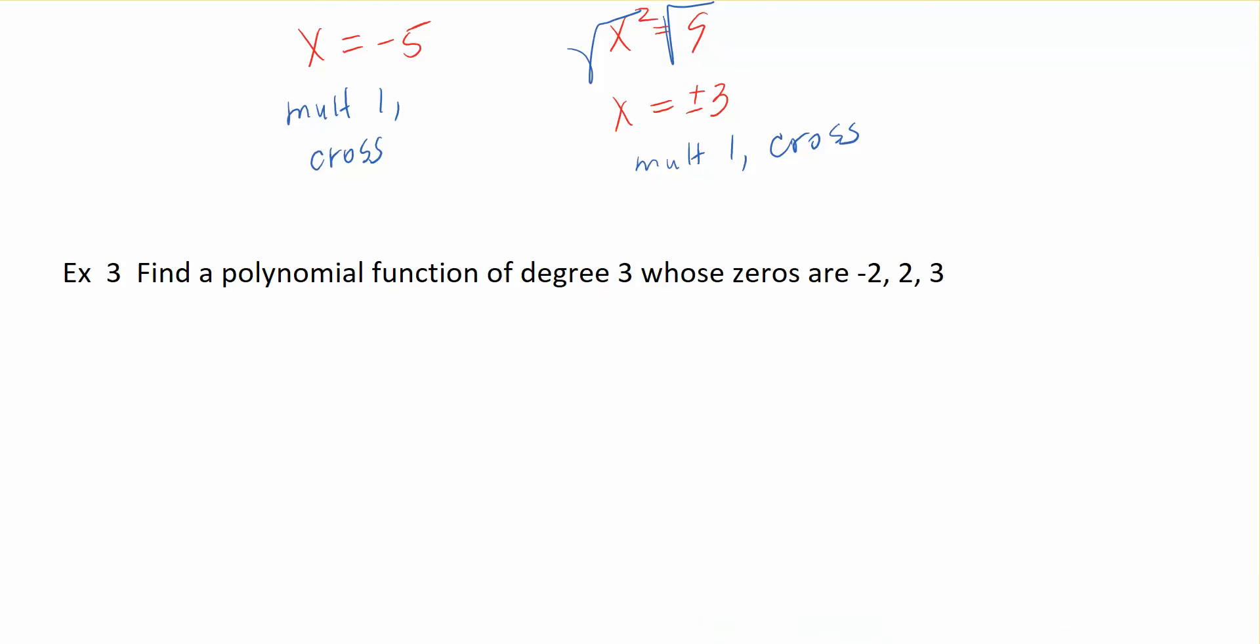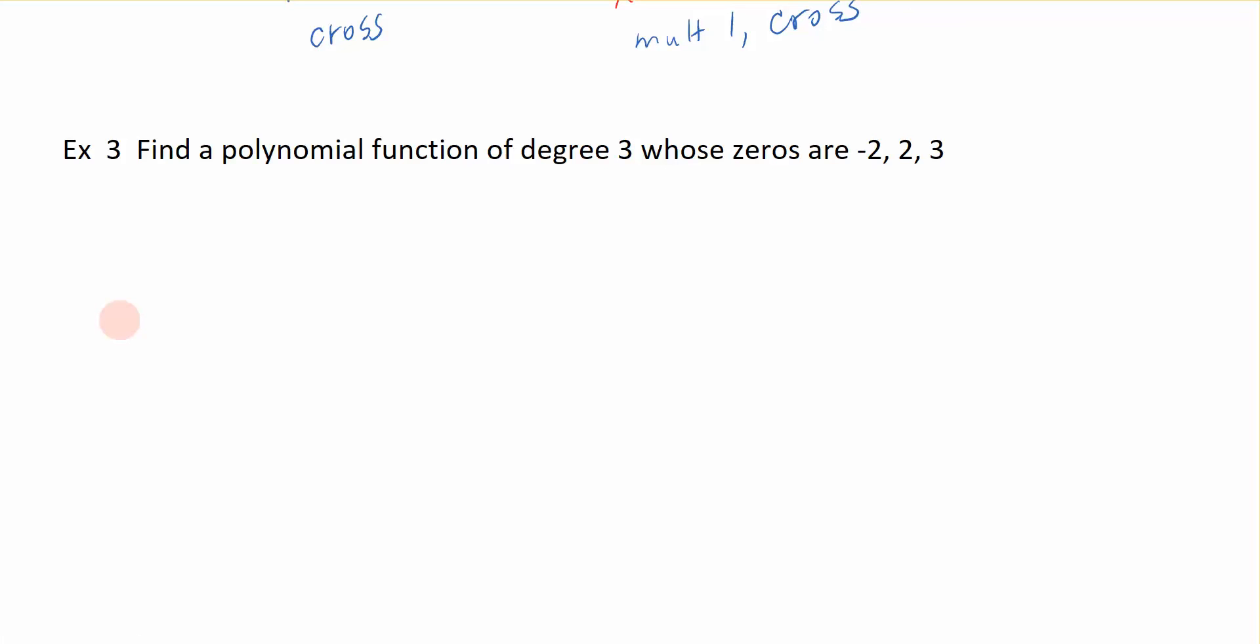Okay, let's see if we can go backwards. Here I want to know, I want to form the polynomial if I already know what the zeros are that are given. Well, where do I start? I'm going to start by talking about these zeros.